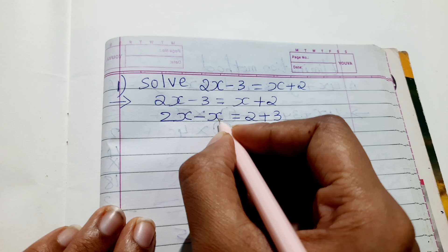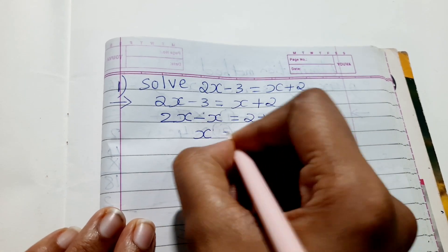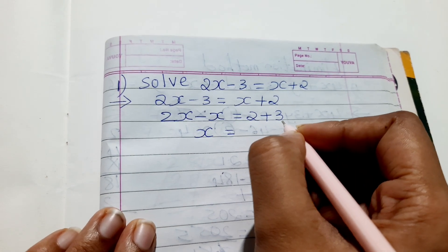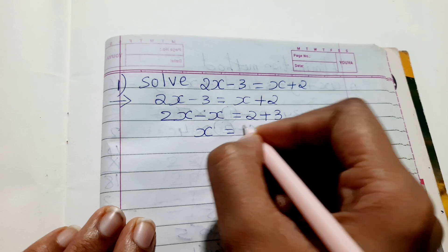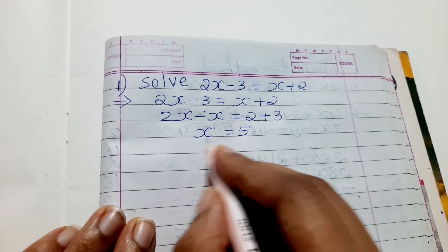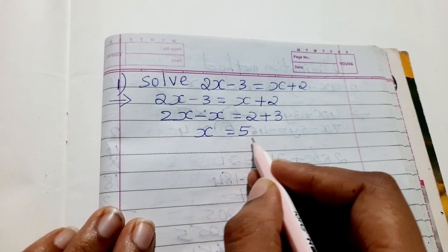Now 2x minus x will be positive x equals 2 plus 3, which is nothing but 5. So what is the value of x? The value of x is nothing but 5.